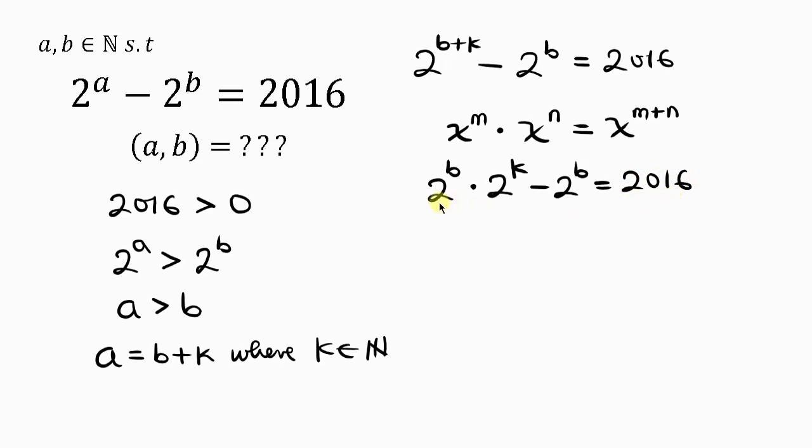Notice that 2^b is common, so we factor out 2^b. This gives us 2^b times (2^k - 1) = 2016.